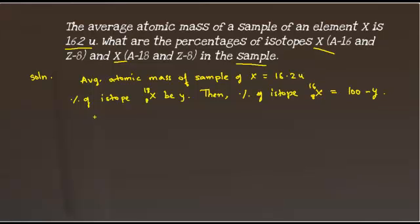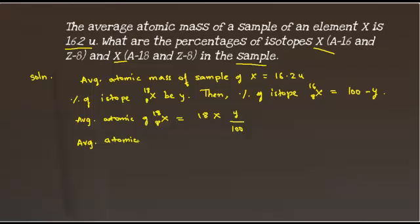Now we can write the average atomic mass contribution of each isotope individually. The average atomic mass contribution of x-18 will be the atomic mass of this isotope multiplied by its percentage composition, that is y upon 100. Similarly, the average atomic mass contribution of x-16 is equal to the atomic mass of that isotope multiplied by its percentage composition, which is (100 minus y) upon 100.